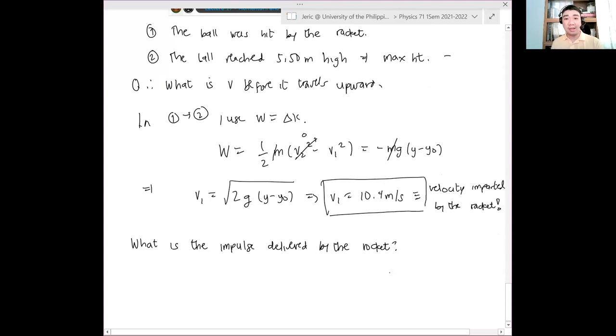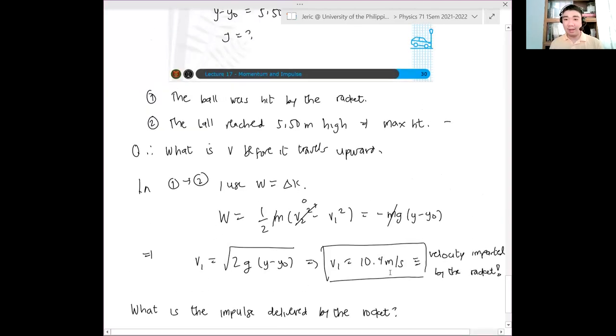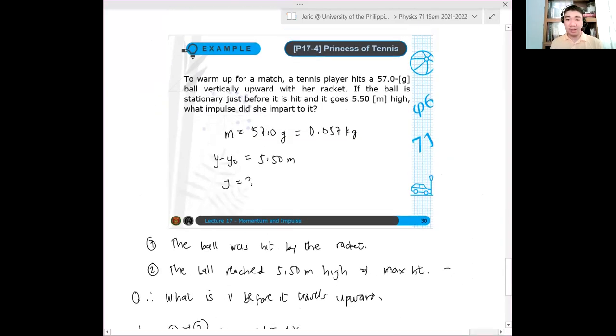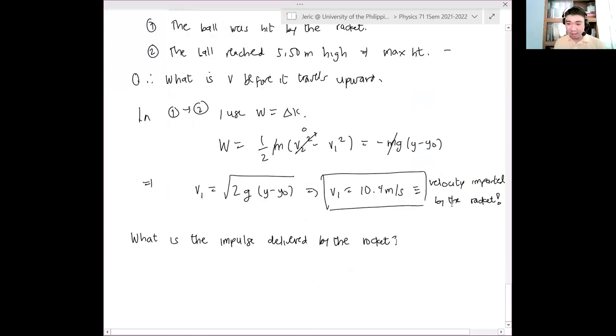Now, initially, how is the situation? Initially, before the racket gives a force on the ball, before the racket hits the ball, it is at rest. Therefore, the initial velocity of the ball, let's say v0 is the initial velocity of the ball at state one. This is zero.